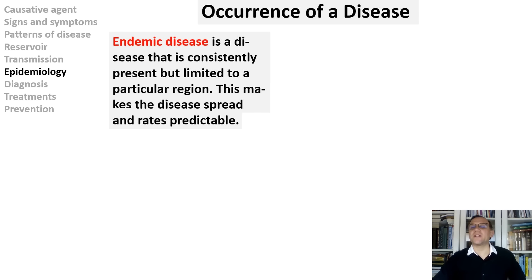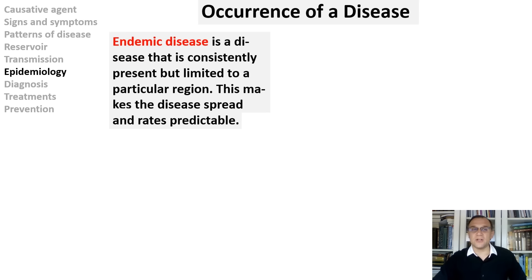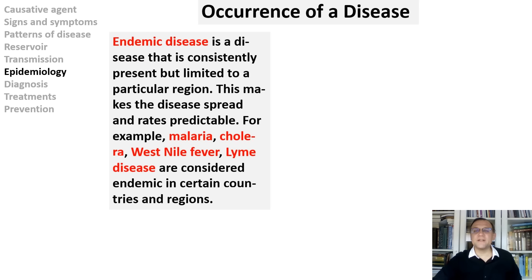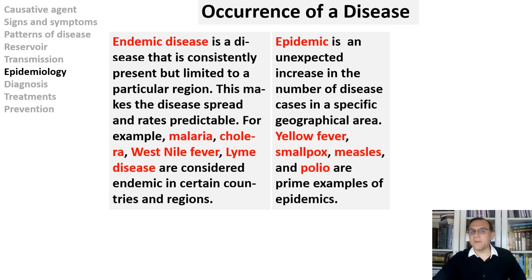An endemic disease is one that is consistently present but limited to a particular region, making the spread and rate predictable. Malaria, cholera, West Nile fever, and Lyme disease are considered endemic in certain countries and regions. Lyme disease is endemic in the Northeast, Northwest, and much of the North Central United States, including Wisconsin, Illinois, Indiana, and Pennsylvania. An epidemic is an unexpected increase in the number of disease cases in a specific geographical region. Yellow fever, smallpox, measles, and polio are prime examples of epidemics.